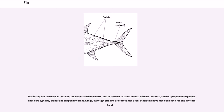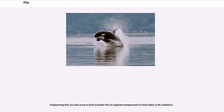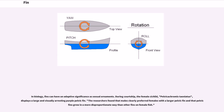Static fins have also been used for one satellite, GEOS. Engineering fins are also used as heat transfer fins to regulate temperature in heat sinks or fin radiators. In biology, fins can have adaptive significance as sexual ornaments. During courtship, the female cichlid Pelvicachromis taeniatus displays a large and visually arresting purple pelvic fin. Researchers found that males clearly preferred females with a larger pelvic fin, and that pelvic fins grew in a more disproportionate way than other fins on female fish.